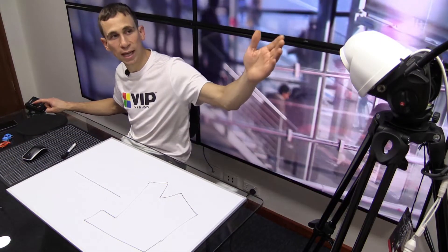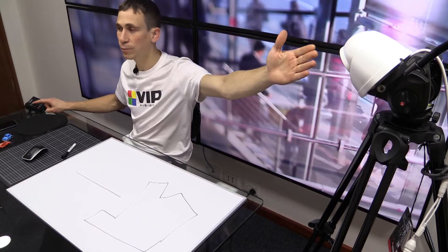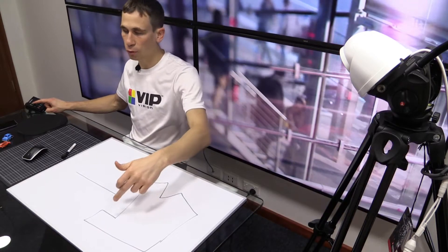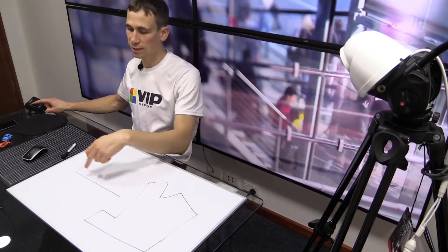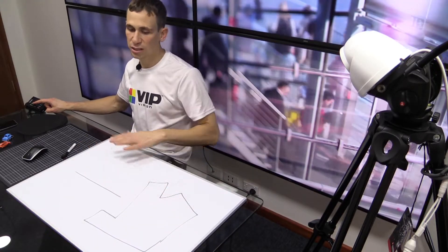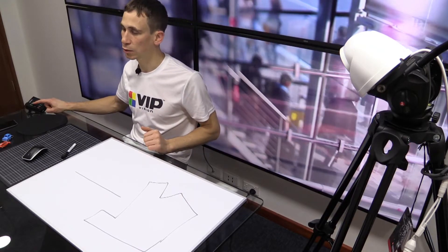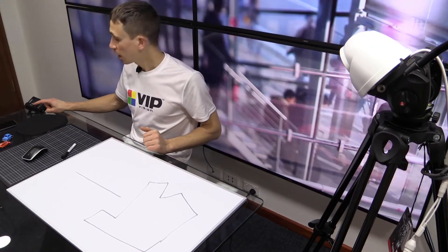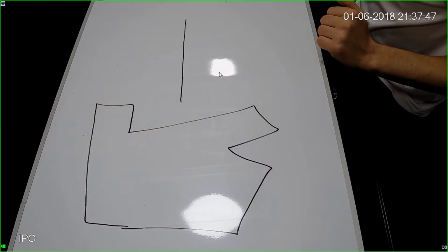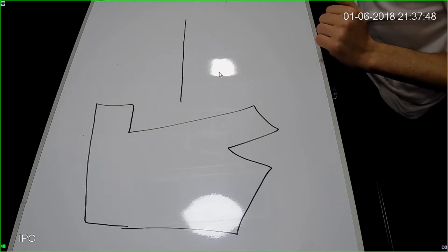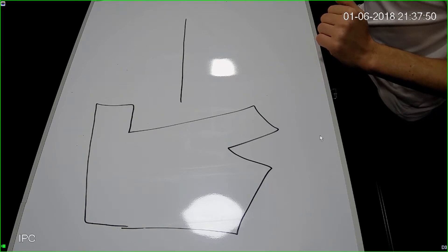We have an 8 megapixel camera set up pointed at a board. I'm going to draw some IVS rules around these areas here. It's just a whiteboard to make it a bit easier for you to see what's actually going on. And this is the recorder that we're connected to — that's the image that you can see.